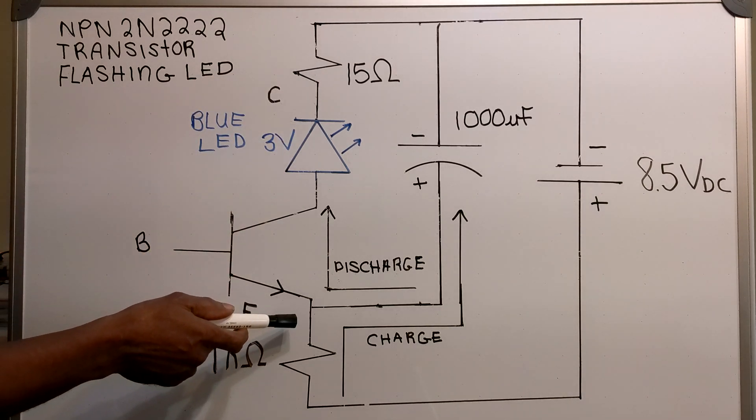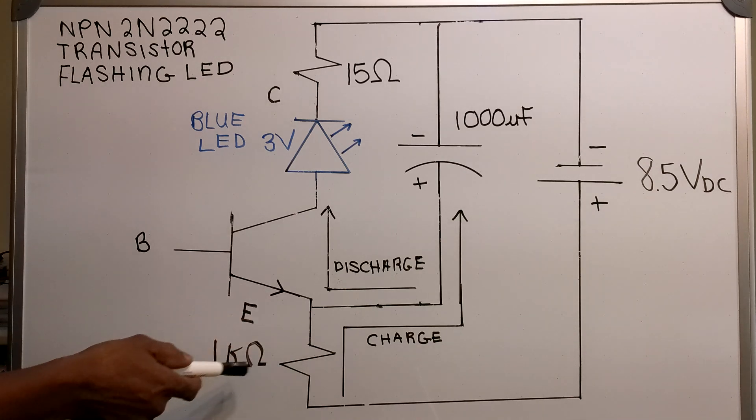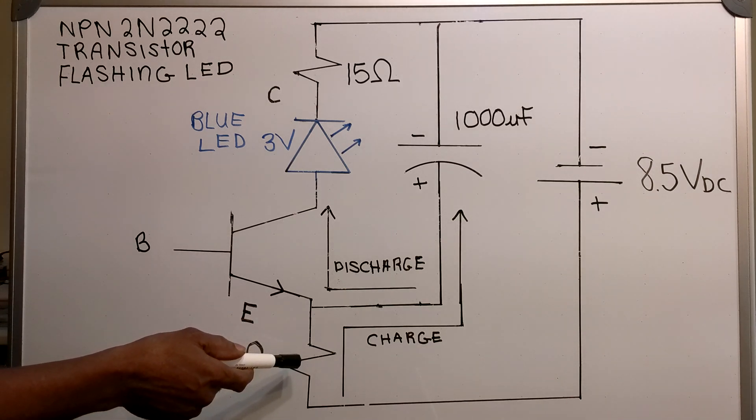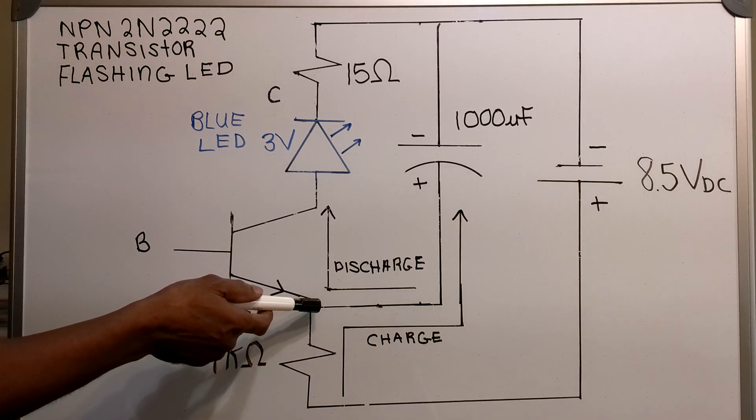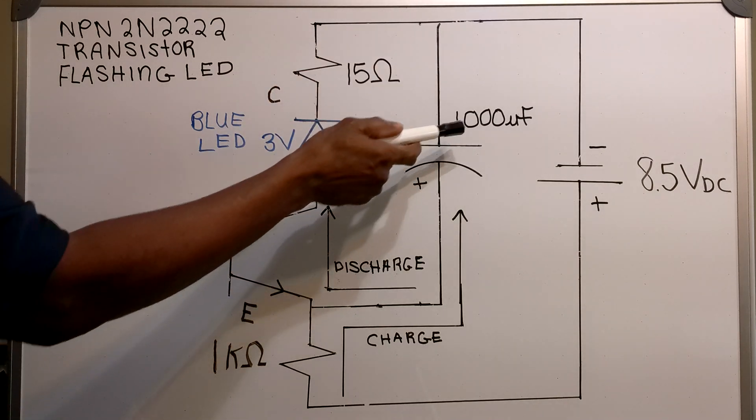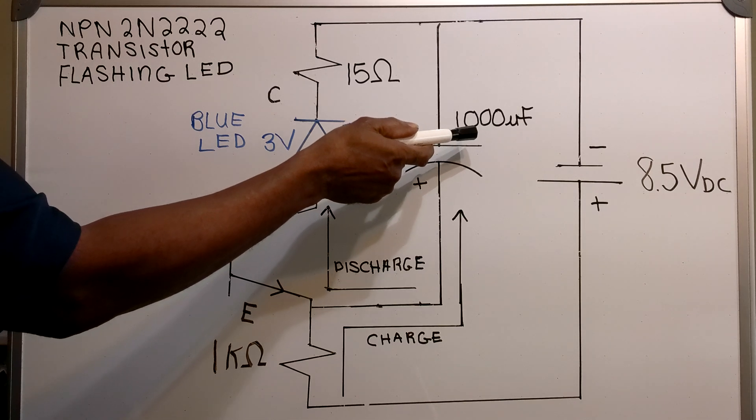On the emitter side I have a 1k ohm resistor. Going from the emitter to the collector side I have a 1000 microfarad capacitor.